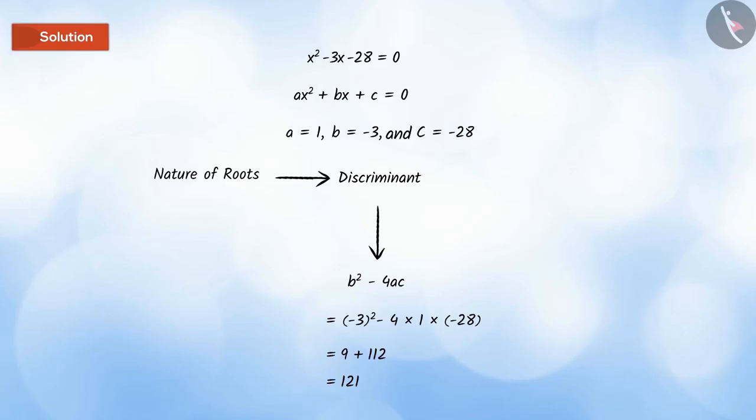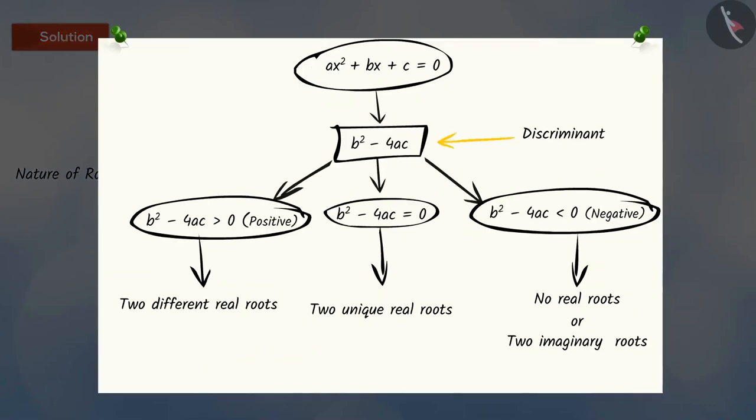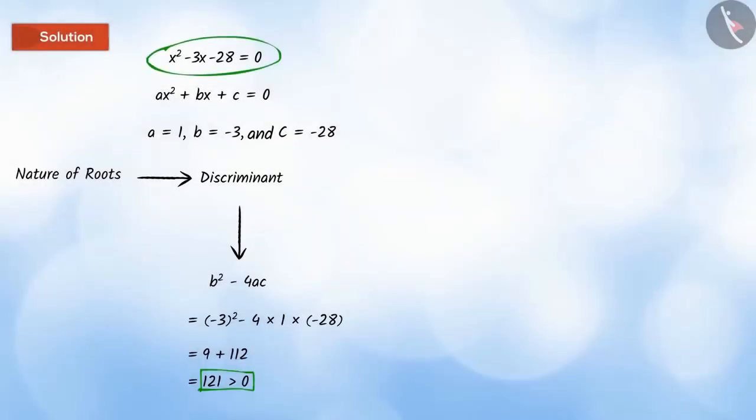Based on this, can you tell the nature of roots of the given quadratic equation? On observing, we can see that the value of discriminant is greater than 0. And we know that if value of the discriminant of a quadratic equation is greater than 0, then that equation has two unequal real roots. So, the quadratic equation x squared minus 3x minus 28 equal to 0 has two unequal real roots. Hence, we can say that this situation is possible.